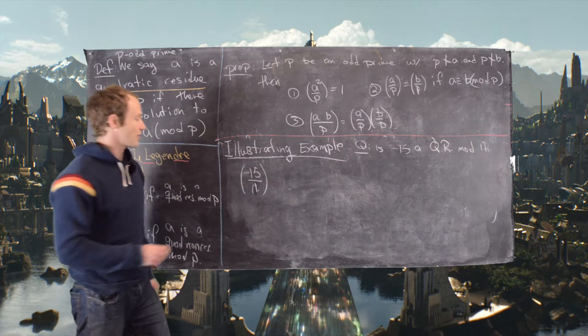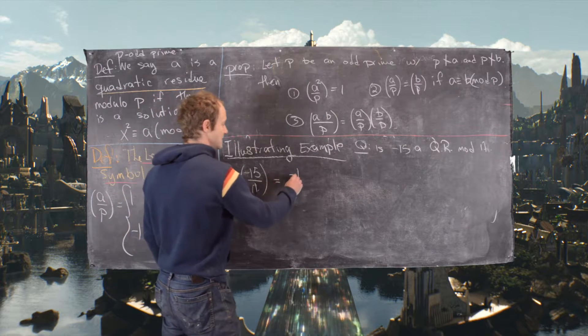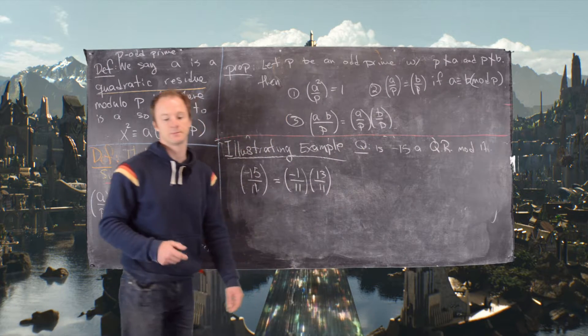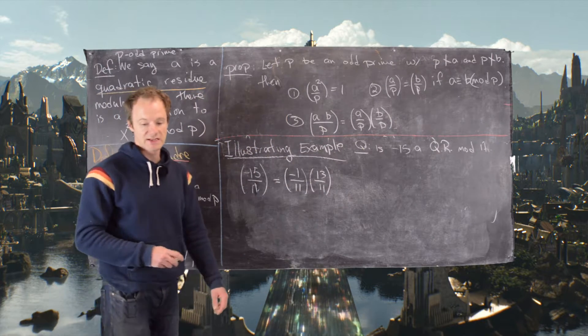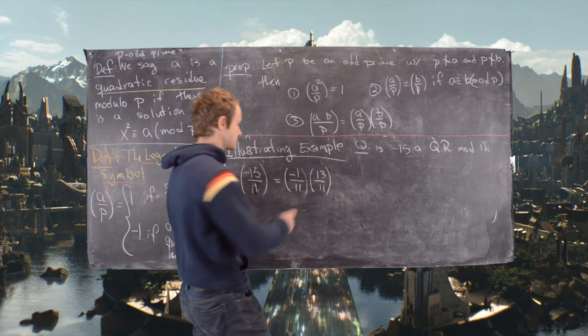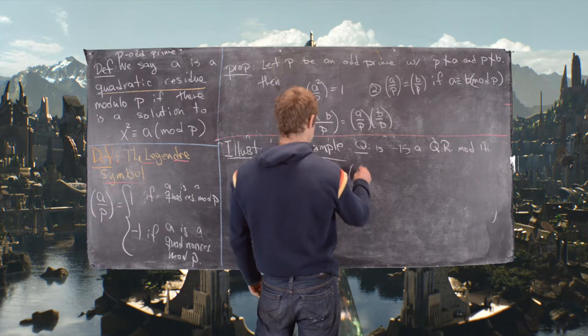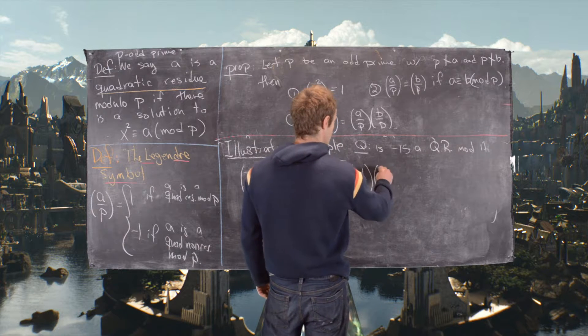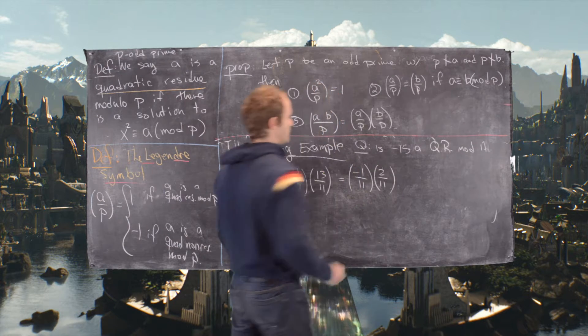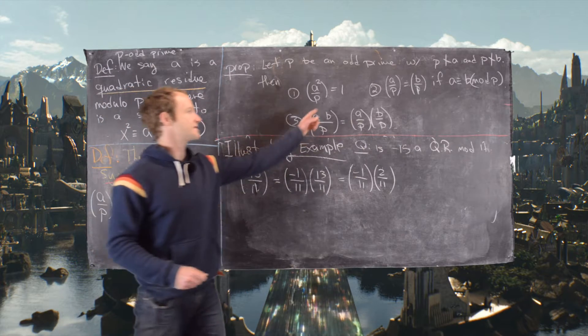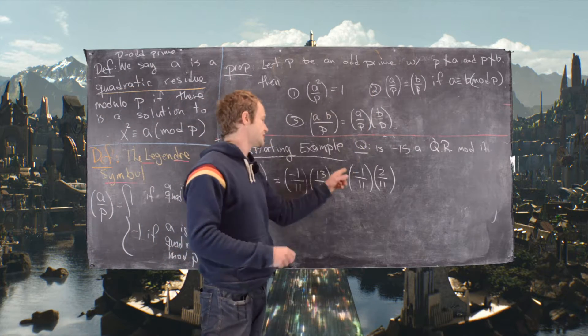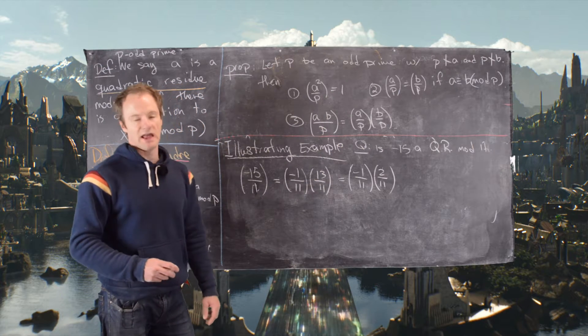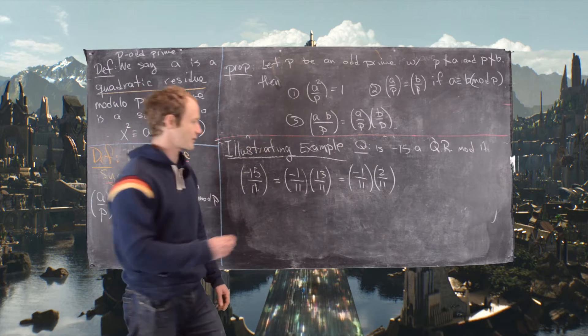So now by part three, we know that this is the same thing as negative one by 11, 13 by 11. And then the next thing that we know is that 13 is the same thing as minus two by 11. We're using part two to do that. So we used part three to split these up, we used part two to do this next bit. And now we're going to use Euler's criterion for the rest.